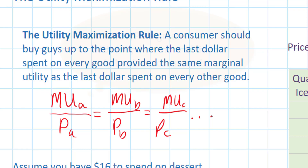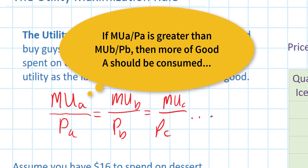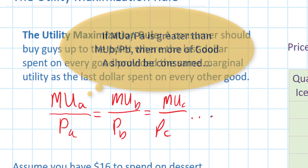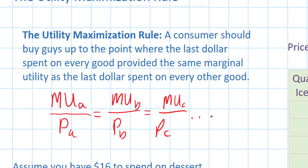Another way of looking at this is that if the marginal utility per dollar spent on a particular good such as A is greater than the marginal utility per dollar spent on another good such as B, the logical thing for a consumer to do would be to buy more of good A and less of good B until those two values are equal.